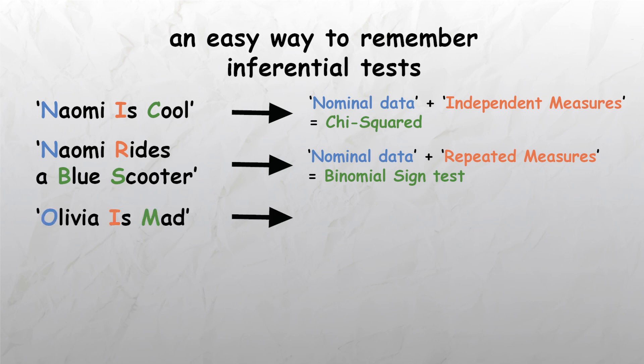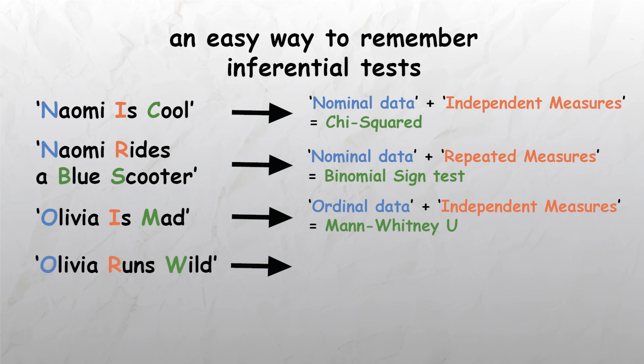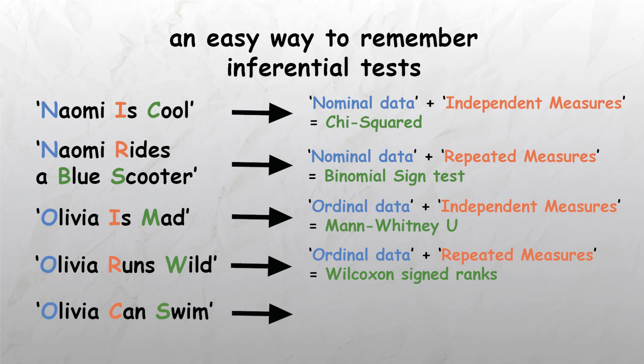Olivia is mad can be used to remember that ordinal data plus independent measures equals Mann-Whitney-U test. Olivia runs wild can be used to remember that ordinal data plus repeated measures equals Wilcoxon's signed ranks test. Olivia can swim can be used to remember that ordinal data plus correlation equals Spearman's rho.